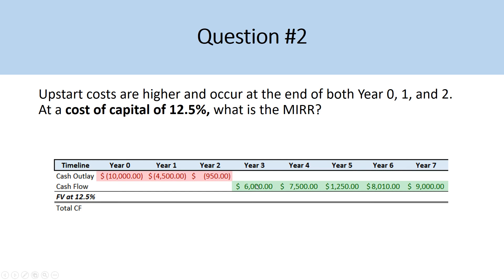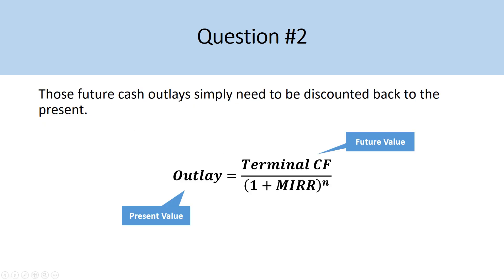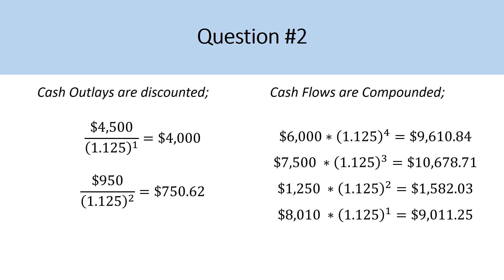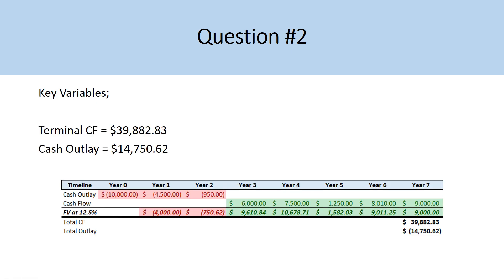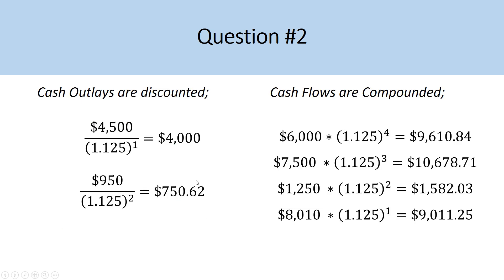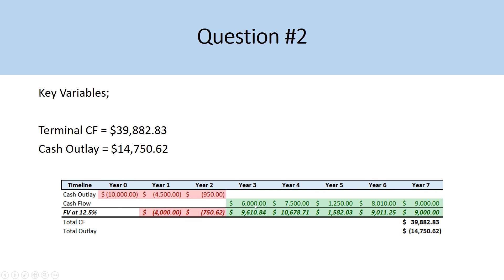The cash inflows — $6,000, $7,500, $1,250, $8,010, and $9,000 — are compounded out to year seven dollars. The cash outflows in year one and year two are discounted back to the present. The $4,500 in year one is discounted to $4,000, and the $950 in year two is discounted to $750.62, giving us a total present value cash outlay of $14,750.62. The cash inflows compounded to year seven give a terminal value cash flow of $39,882.83.